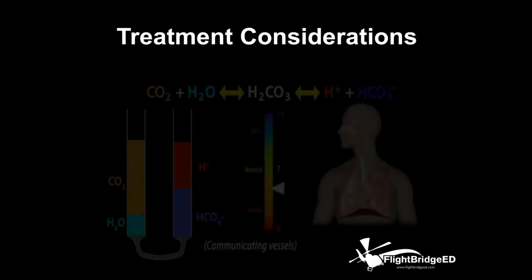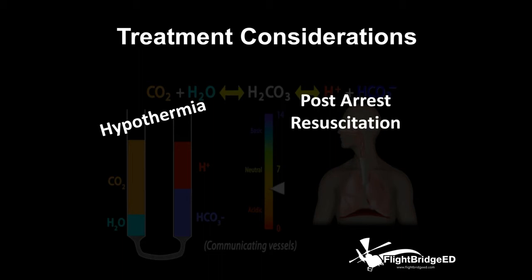Now let's look at our treatment considerations. We started off with hypothermia. Even though we have a temperature greater than 30, we have to continue moving upward — we don't want an after-drop situation. We have a post-cardiac arrest situation, so we must continue to focus on airway, breathing, and circulation. Advanced airway management is going to be the key — mechanical ventilation, sedation, good pain management. Do we have hemodynamic instability addressed? Do we have vasopressors, inopressors, and pure vasopressors considered? What do the laboratory values tell us as far as our treatment methodology over the next 30 minutes, one hour, two hours?